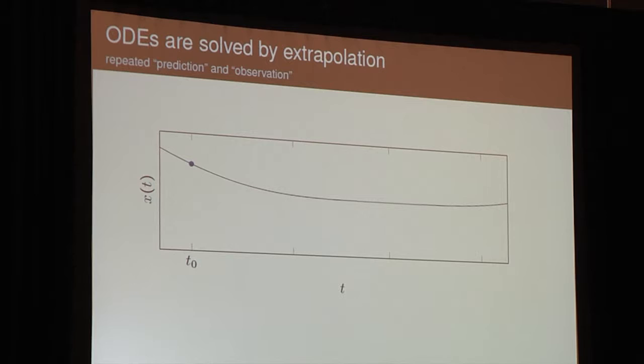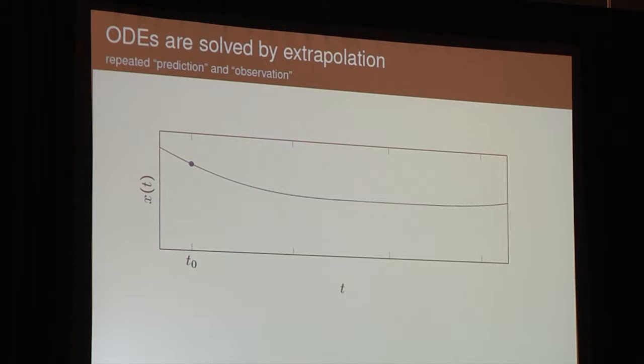Now, this is called an initial value problem. Here I depicted such an initial value problem. The black line is the true solution to such a problem, to some ODE. We don't know the true solution. The algorithm doesn't know the true solution. Usually, there's no analytic formula for this, so you need a numerical algorithm to solve this problem. And the only thing we've got is the blue dot over at the left end, which is the initial value.